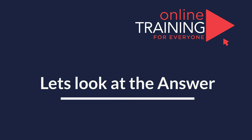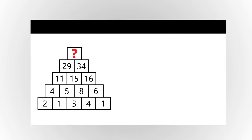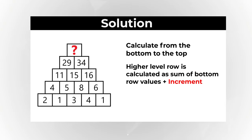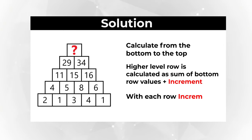Tricky problem, don't you think so? But the solution to this challenge is really simple. To calculate it correctly, you need to move from the bottom to the top. And if you look closely at the pyramid, you will notice that the higher row is calculated as the sum of bottom values plus the increment. The increment also increases with each row by one.